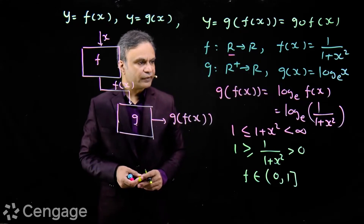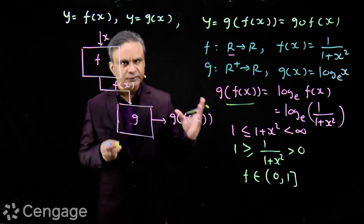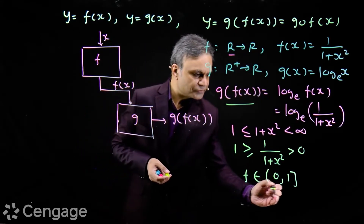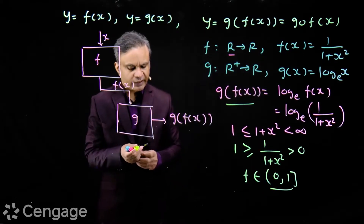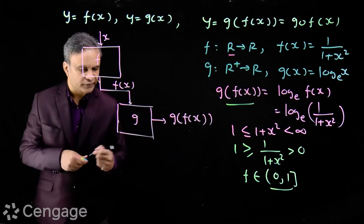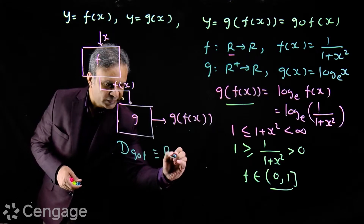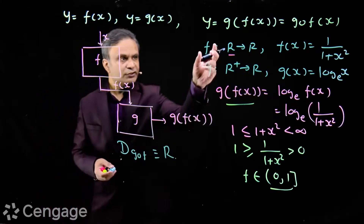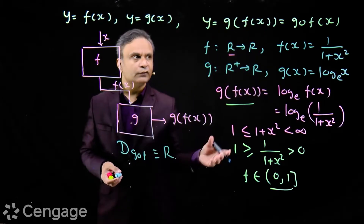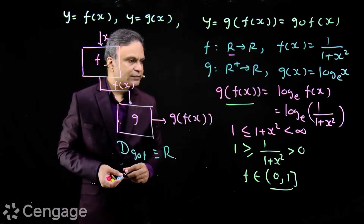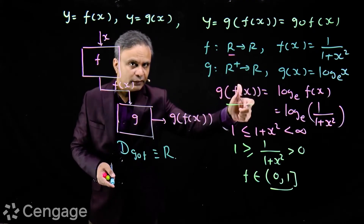So the domain of function g(f(x)) will be the set R, because for all x belonging to R, f(x) belongs to (0, 1] and all these values are acceptable to function g(x). The domain of g(f(x)) equals the domain of function f — here f is the inner function and g is the outer function, so the domain of g(f(x)) is the domain of the inner function.